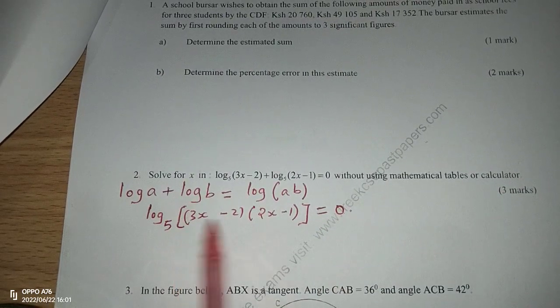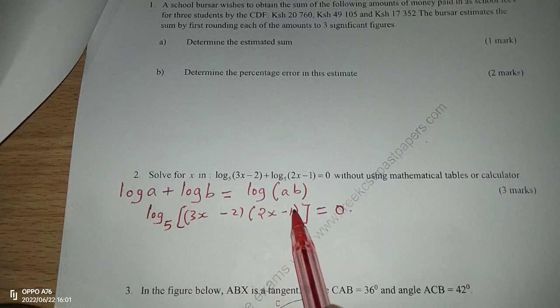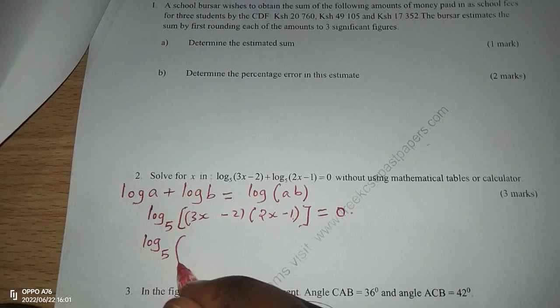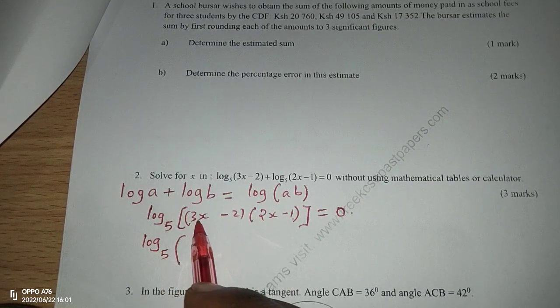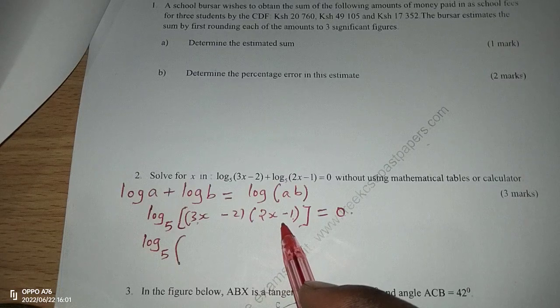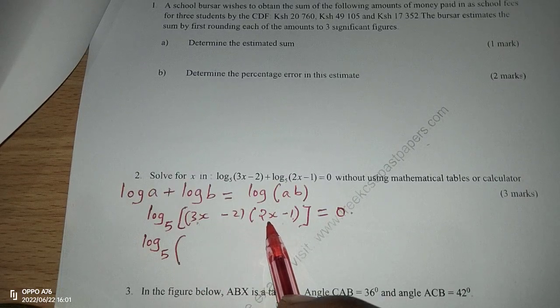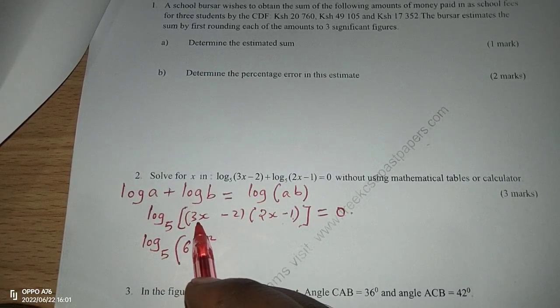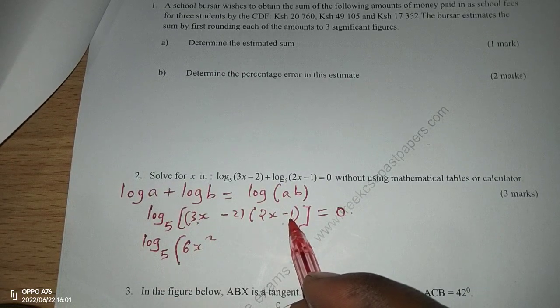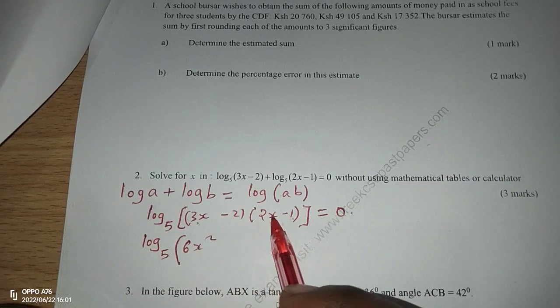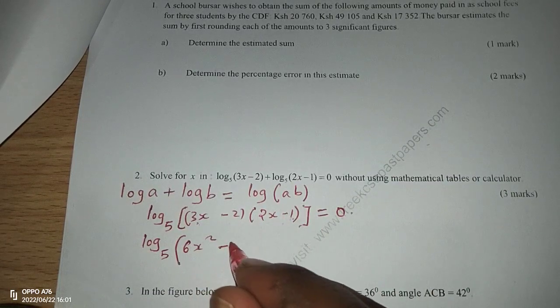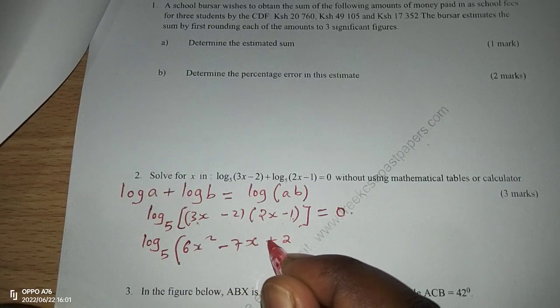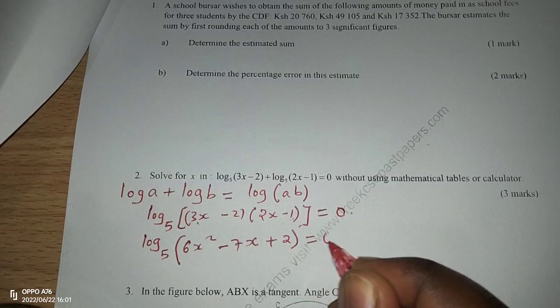Therefore, we can expand these brackets, whereby we shall have the logarithm to base 5 of, if we multiply 3x times everything in the second brackets, whereby 3x will go by 2x, giving us 6x squared. Then 3x by negative 1 and negative 2 by 2x, that will give us negative 7x, then positive 2 equals to 0.